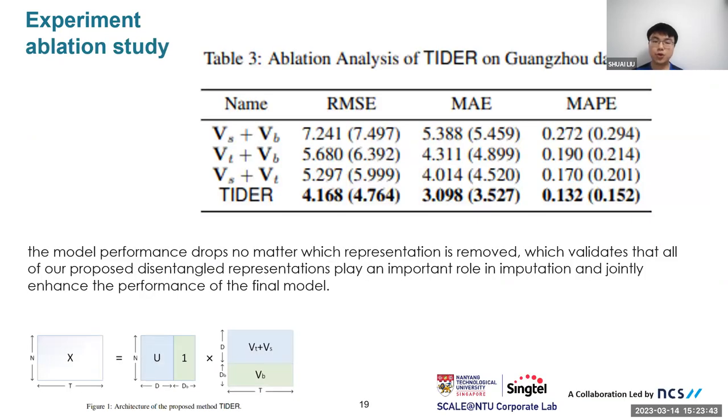Then, in order to show the effectiveness of all three representation matrices, we conducted an ablation study. We can find that model performance drops no matter which representation matrix is removed. This validates that all our proposed representations play an important role in imputation and jointly enhance the performance of TIDER. Also, there's an interesting part - when we discard the bias part, it performs best compared to other two ablation models, which means that sometimes bias does not frequently occur during the time period. Thus, discarding it has the least influence.